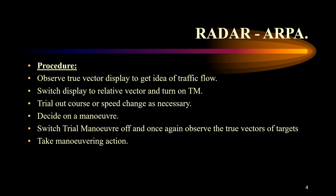Try out course and/or speed changes as necessary. You can see how the scenario would play out if you change the course or change the speed, without actually changing the ship's course or speed. Then you can decide on a maneuver and switch the trial maneuver off — based on the fact that a particular maneuver will ensure your ship is safe at all times, whether for collision avoidance, staying clear of a landmark, or staying away from a cluster of fishing boats. Once again observe the true vector of targets and then take your maneuvering action.